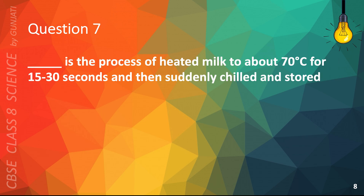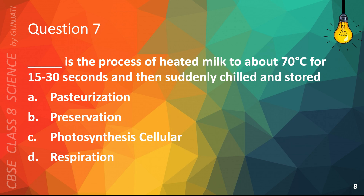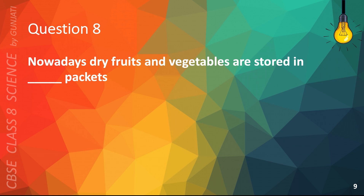Question 7. Blank is the process of heating milk to about 70 degrees Celsius for 15 to 30 seconds and then suddenly chilled and stored. A. Pasteurization, B. Preservation, C. Photosynthesis, D. Cellular Respiration. The correct answer is A. Pasteurization.